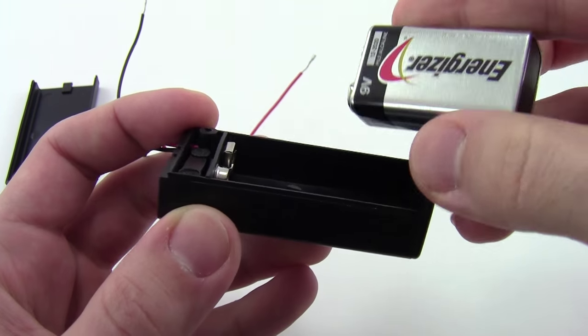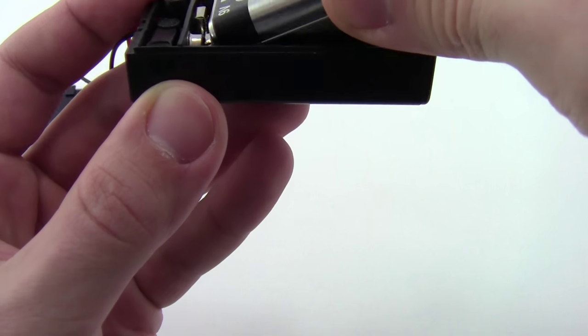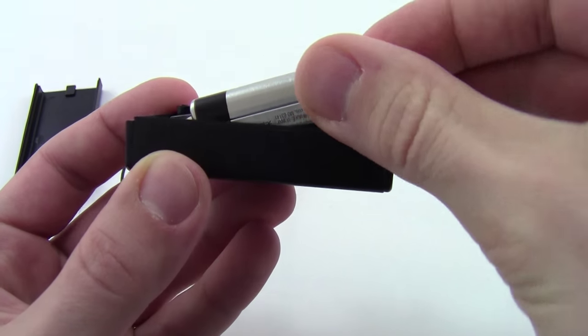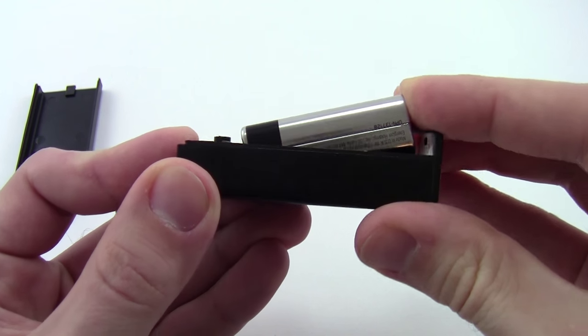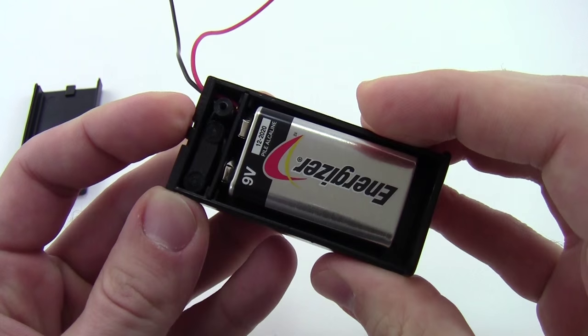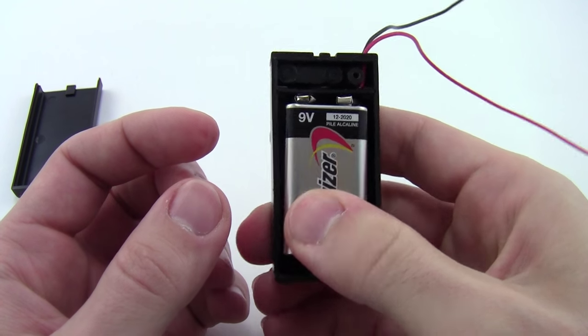What you do want to do is line the battery up at about a 30-degree angle to start. Hold it like that, and then simultaneously press in and down, and the battery will snap right into place. It's in there snugly and the snaps will hold onto it.